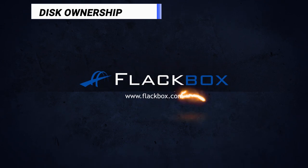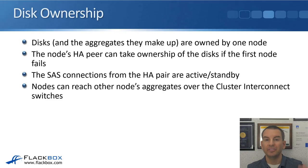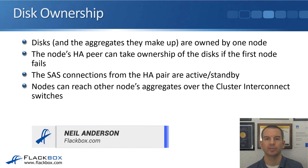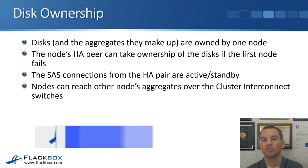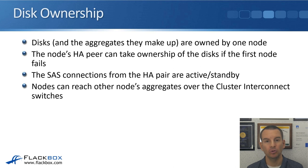In this lecture, you'll learn about disk ownership and how it's assigned to the disks in your cluster. The first point is super important: disks and the aggregates that are made up of those disks are owned by one and only ever one node. The node's HA pair can take ownership of the disks if the first node fails.